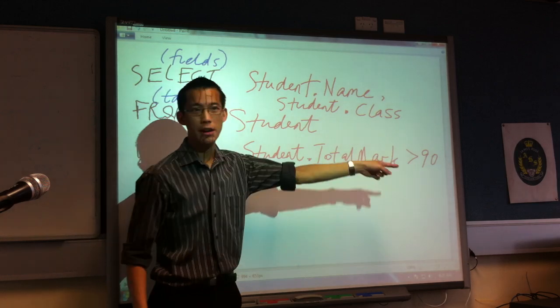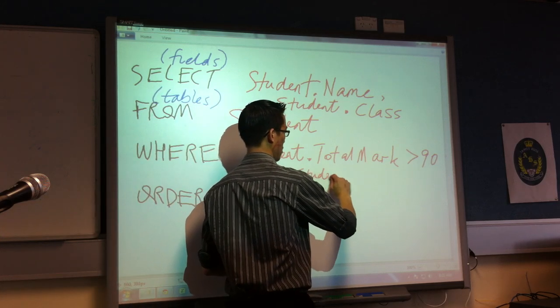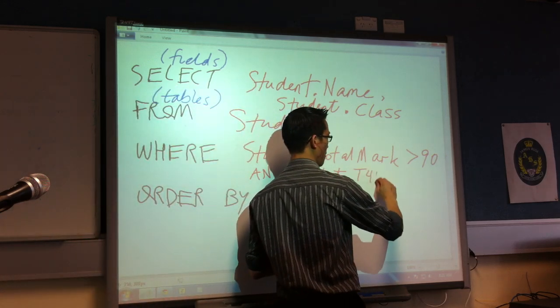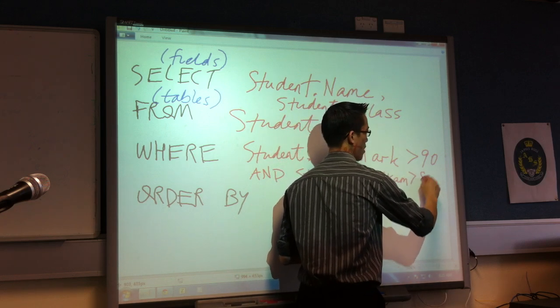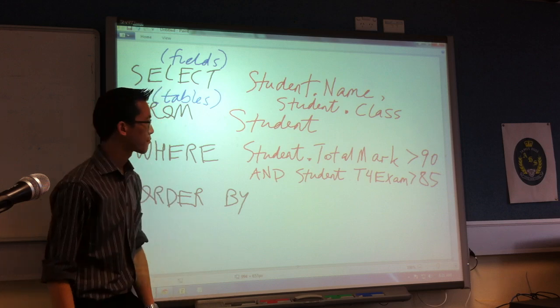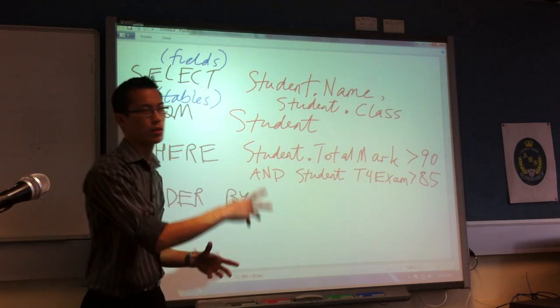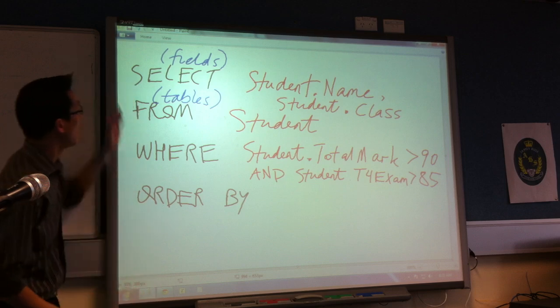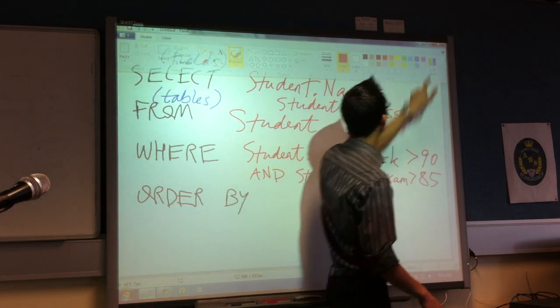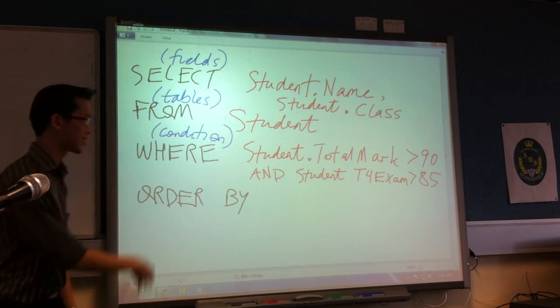See what's going on? I'm looking at a particular field and I'm applying a condition to it. And so this is the question I'm posing. Obviously not everyone in the database will meet this condition, so the output of this query, the answer to the question if you like, will just give me those particular things that will meet this condition. I might apply other conditions as well. I might say the student's total mark is greater than 90 and, for instance, the student's term 4 exam is greater than 85. So what I'm going to do is I'm looking for both of these conditions to be met simultaneously.